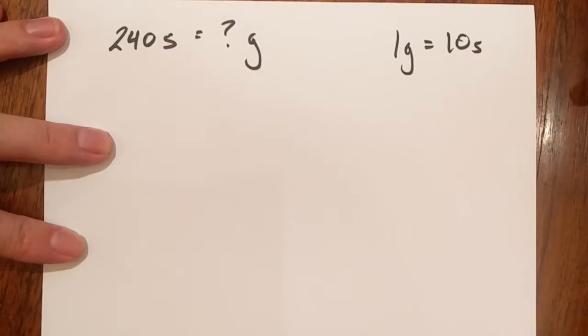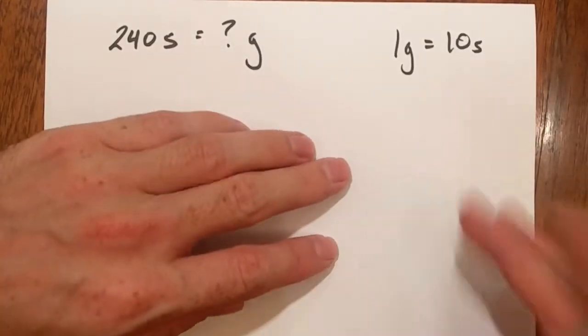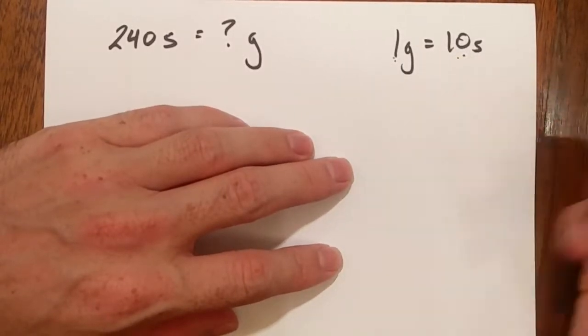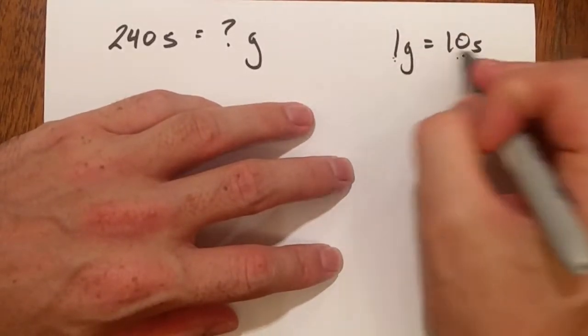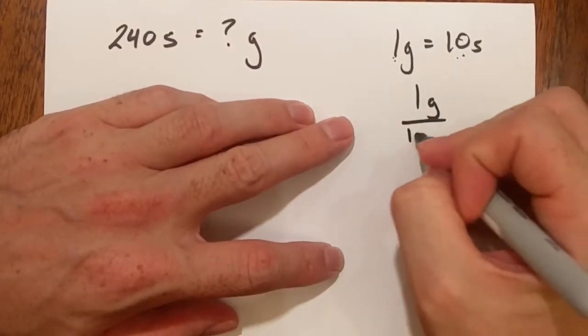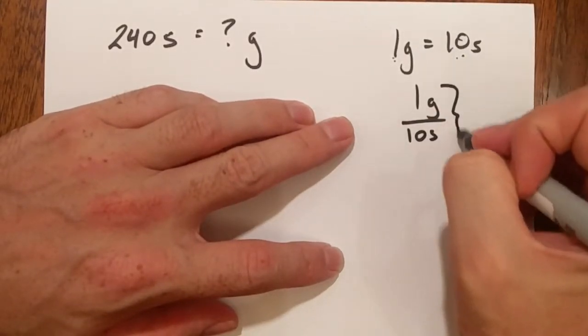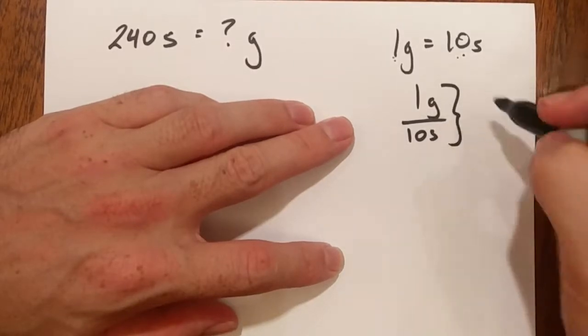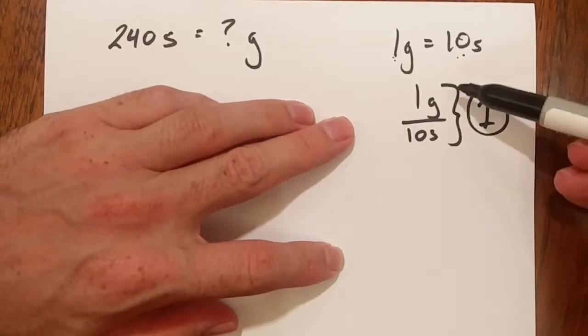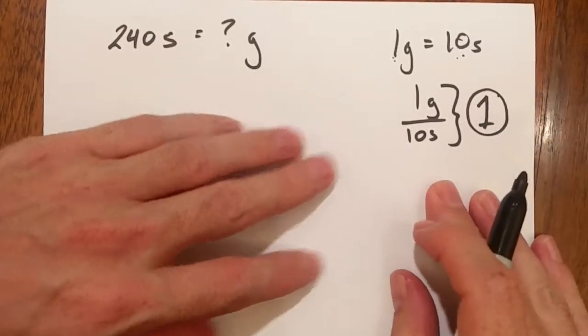Some background information we need to know is that whenever I take two values or two numbers of the same value and divide them, well I get one. So since these are equal, what I can do is say one gold divided by ten silver, well because those two have the same value, this fraction turns out to be equal to one. Whenever you divide something by the same thing it is equal to one.